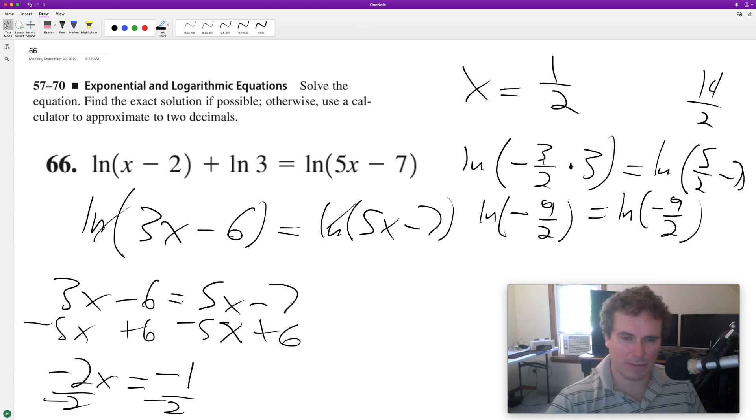Actually, this doesn't have a solution. I mean, it does end up equaling negative one half, but you can't have a negative value inside the logarithm. Your total inside the natural log can't be less than zero.